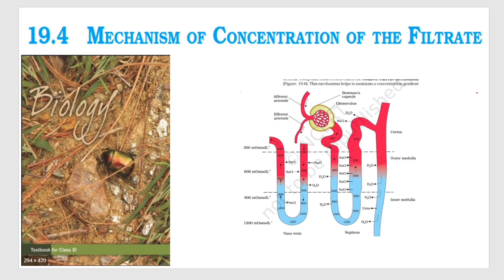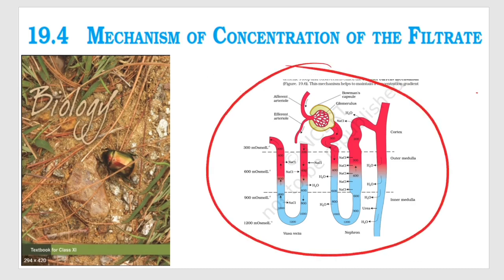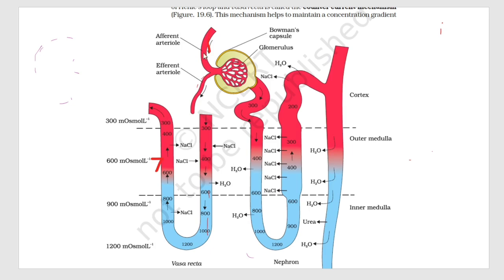Let's discuss. First of all, this image is very necessary to understand. Here you have a drawing of the nephron, and here you have one thing that is your vasa recta. Vasa recta is made from the continuation of the efferent arteriole, which is made from the glomerulus. You can see the hairpin-shaped U-shaped loop of Henle.